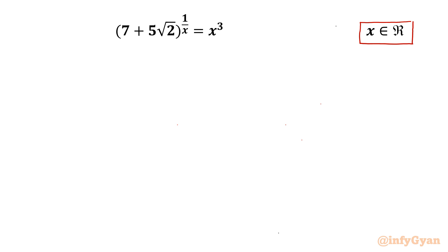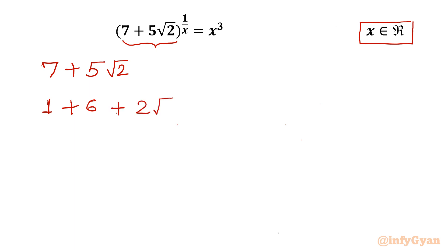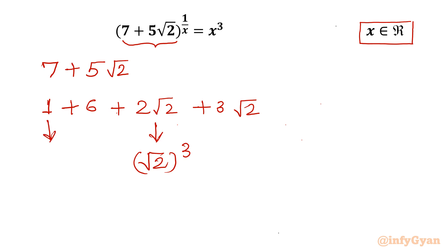Let's get started with our LHS and from the base only. I will write 7 + 5√2. I can split this as: 7 = 1 + 6, and 5√2 = 2√2 + 3√2. Now I can see that 2√2 is (√2)³, since √2 × √2 × √2 = 2√2, and 1 can be considered as 1³. So these two terms are confirmed; we only have to check the remaining two terms: 6 and 3√2.